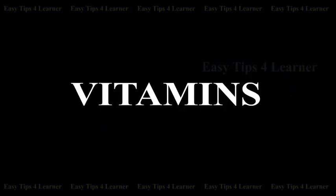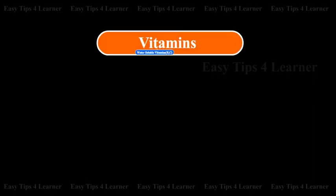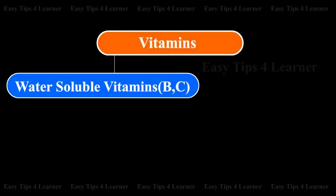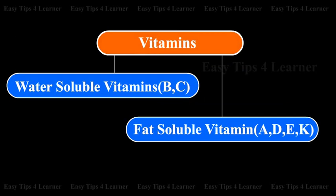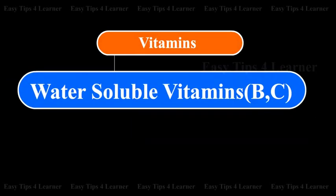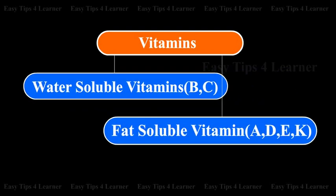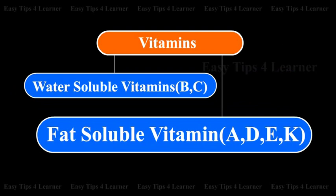Vitamins are divided into water-soluble vitamins and fat-soluble vitamins. The water-soluble vitamins consist of B and C. The fat-soluble vitamins consist of A, D, E, and K.